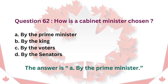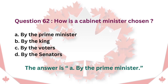Question 62: How is a Cabinet Minister chosen? A. By the Prime Minister. B. By the King. C. By the Voters. D. By the Senators. The answer is A. By the Prime Minister.